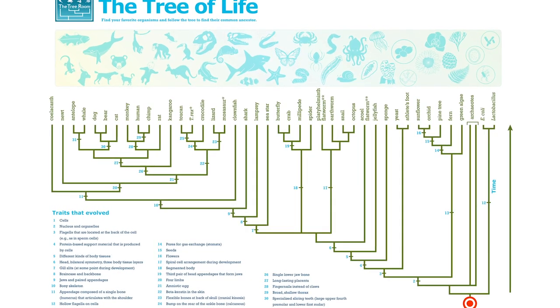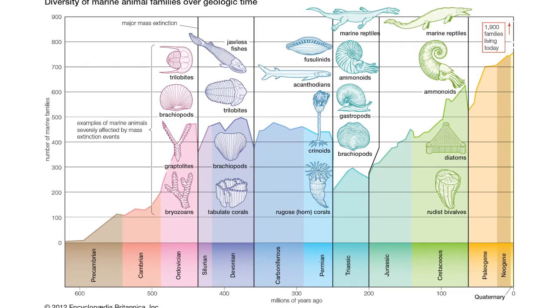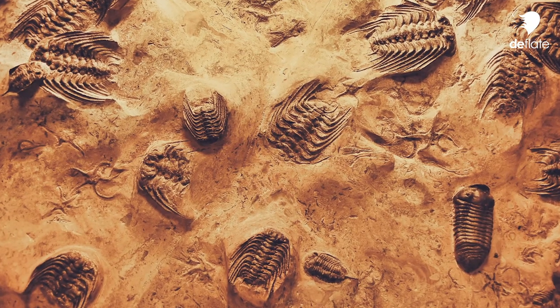Darwin said: "I have called this principle by which each slight variation, if useful, is preserved by the term natural selection, in order to mark its relation to man's power of selection." Darwin's hypothesis in the Origin of Species was essentially this: starting from one common ancestor, all life forms evolved slowly and gradually over long periods of time, as random mutation would bring up new traits from which natural selection would preserve or select the ones that are useful for survival.